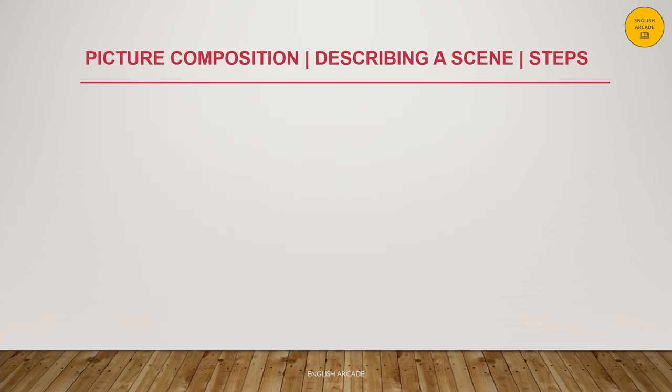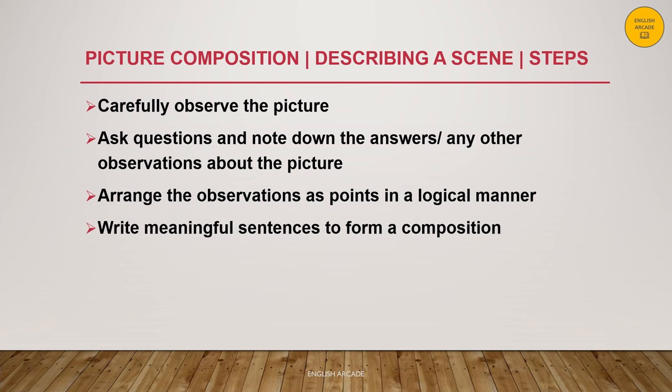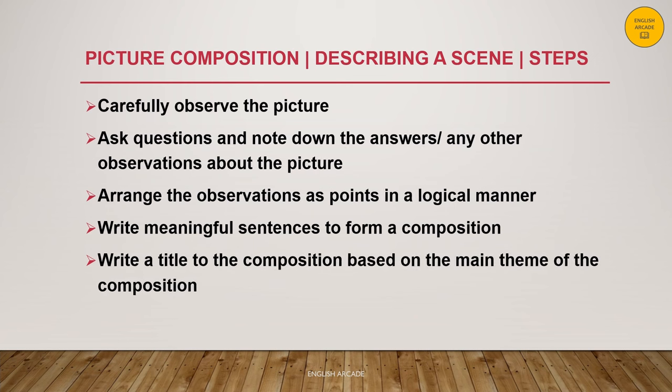Let us now understand the steps that are required to describe a scene in a picture composition. Remember, these steps will be applicable for a single picture with many elements. First, carefully observe the picture. Then, ask questions and note down the answers or other observations about the picture in your notebook. After that, arrange the observations as points in a logical manner and then write meaningful sentences to form a composition or a paragraph. Finally, write a title for the composition which should be based on the main theme of the composition.